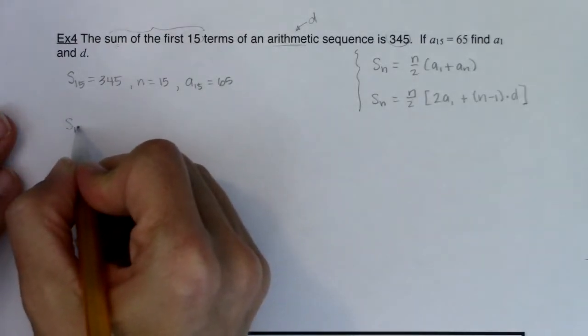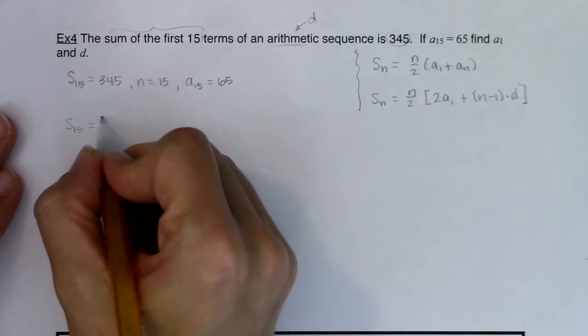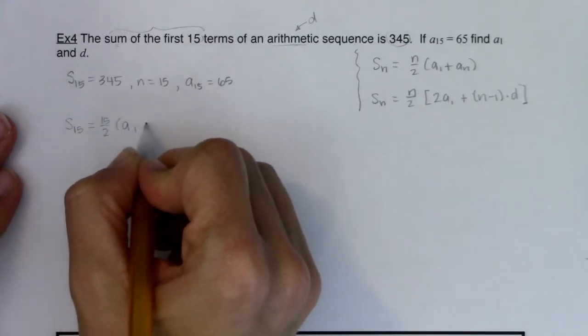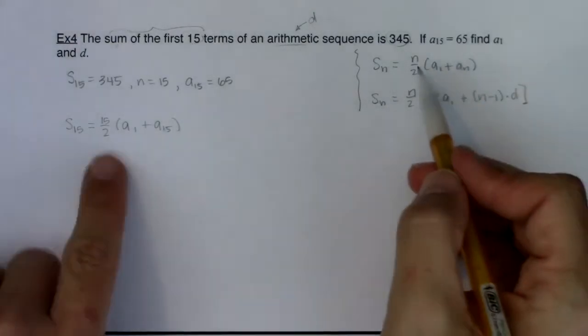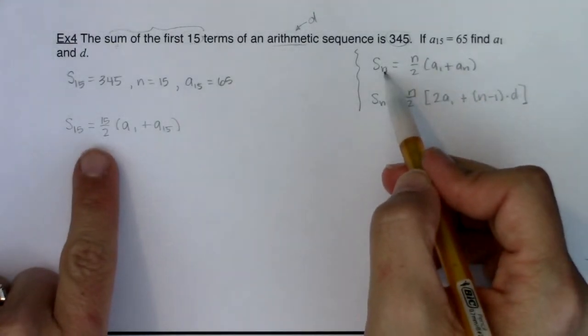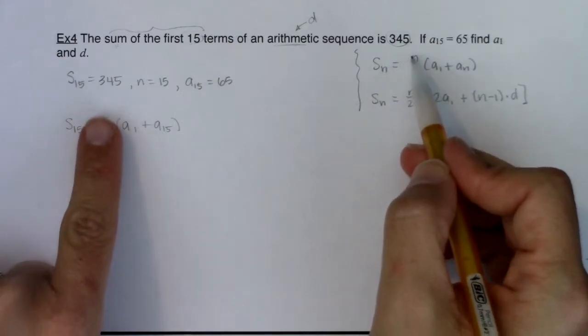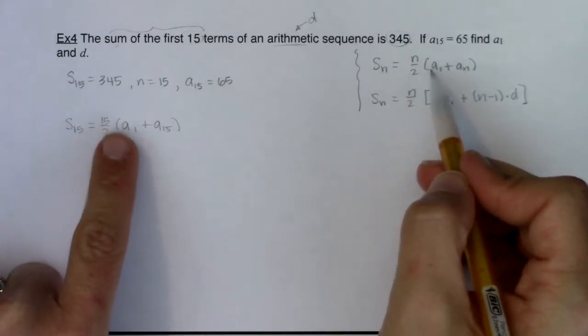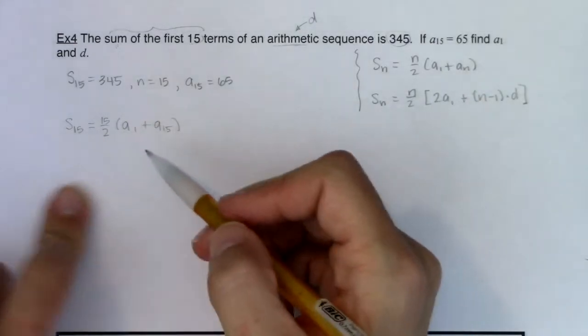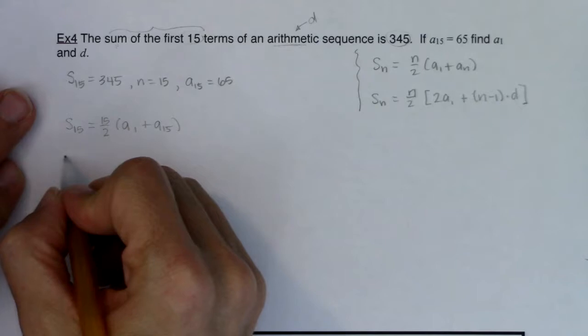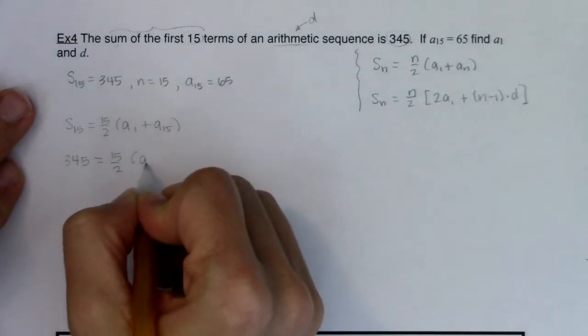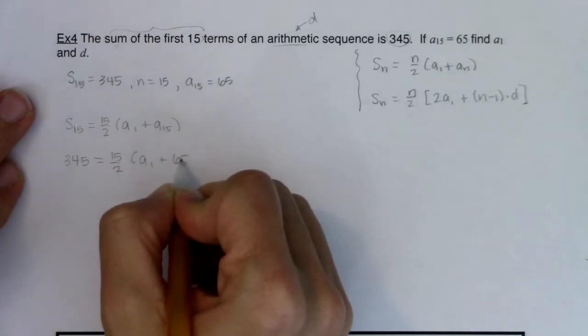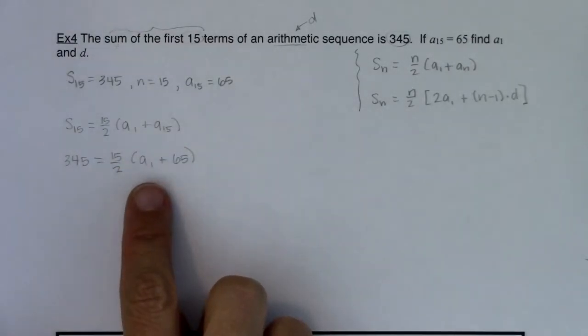So if I look, we know s sub 15 would be equal to 15 over 2 times a sub 1 plus a sub 15. So I'm using this equation right here, I'm plugging in n equaling 15. We know three of these four variables, so I know s sub 15 is 345. I know that's equal to 15 over 2 times a sub 1 plus 65. And you can see the only thing left for me to solve for right now is a sub 1.